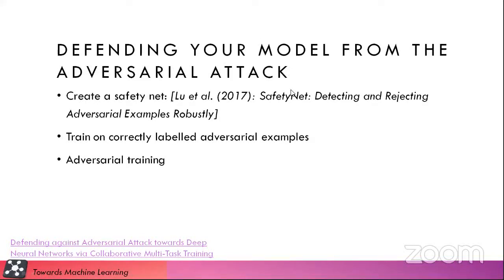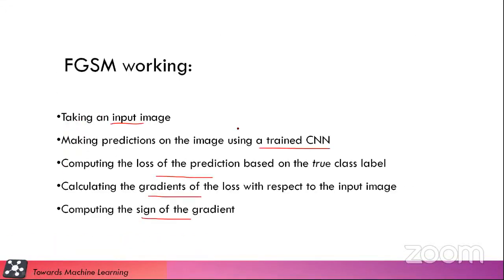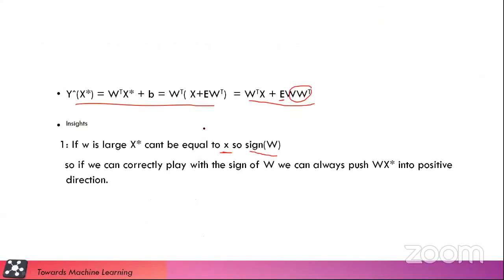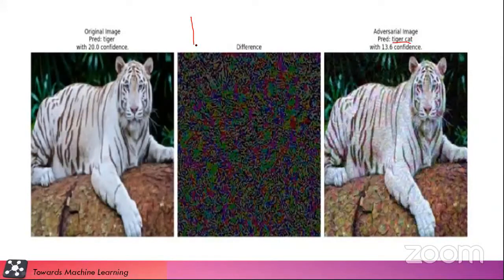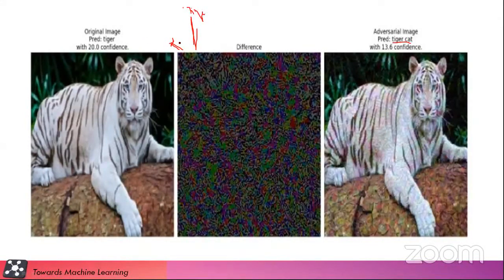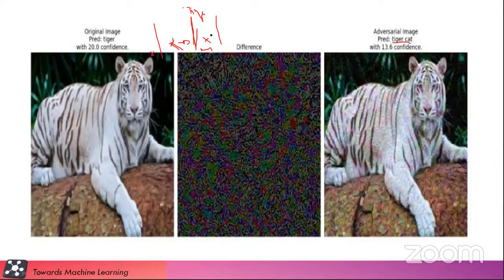Is there any relation between epsilon and confidence — as epsilon increases, does confidence increase? We cannot say whether as epsilon increases the confidence increases. Suppose this is the field and you are here, and this is the boundary for the tiger. You calculate the gradient and move it in a positive direction, then you will get to the boundary of tiger cat. If you decrease X, you can come back. So we cannot say whether it will affect the confidence percentage — you need to check it.